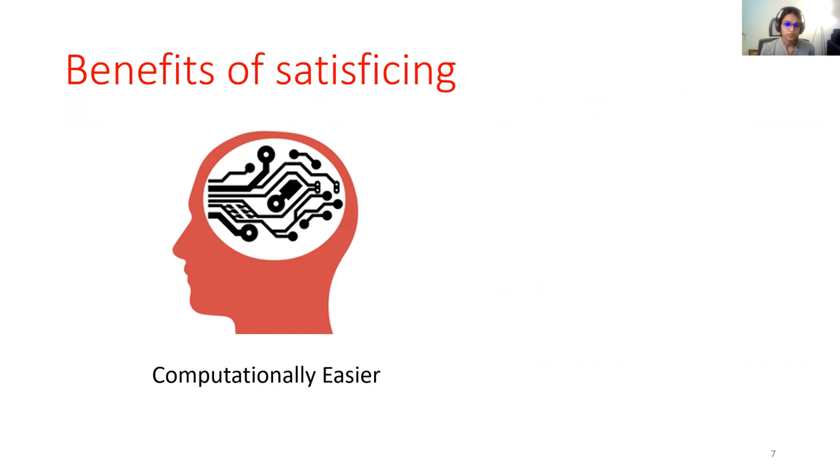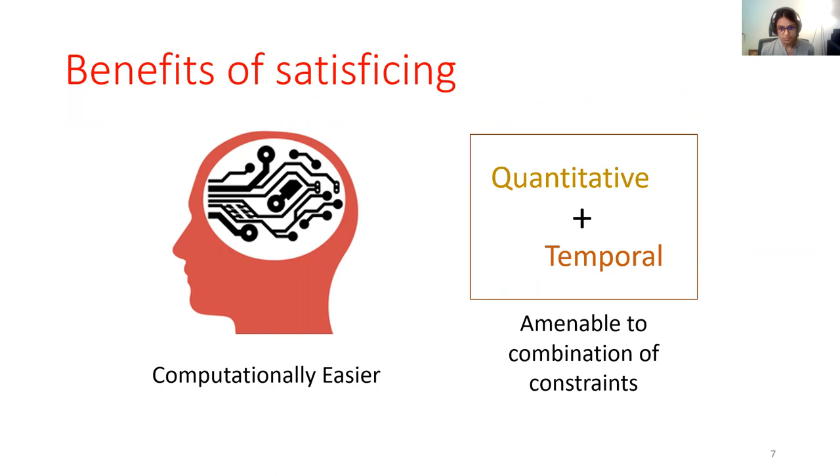In another example of their benefits, a lot of times quantitative constraints are combined with temporal constraints. However, optimal solutions do not combine well with other hard constraints. On the contrary, because good enough solutions are softer constraints, they may be more flexible to be able to combine with other hard constraints.